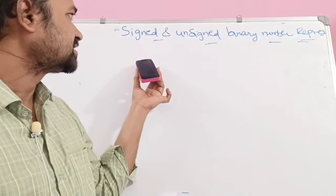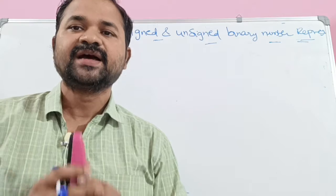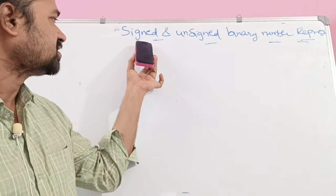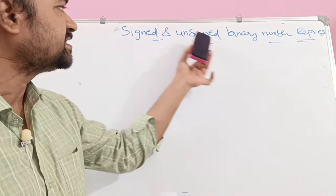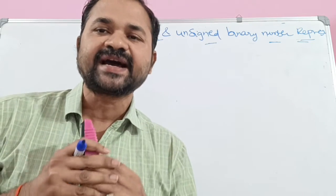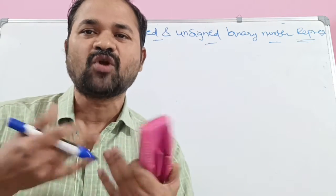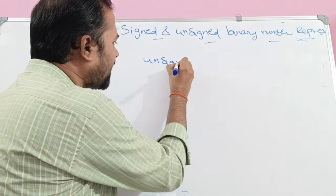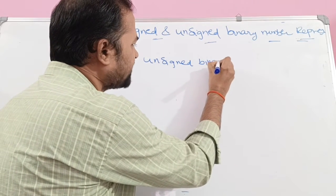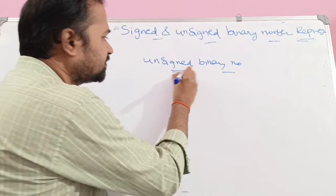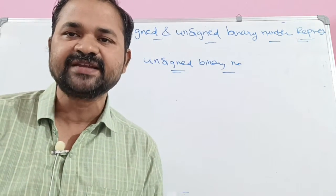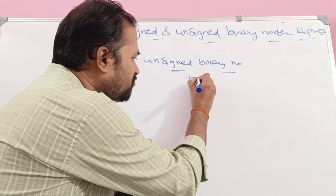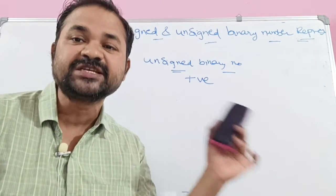Let us discuss signed and unsigned binary number representation. We can represent a binary number in two ways: the first way is using signed representation, and the second way is using unsigned representation. First, let us see what an unsigned binary number is. Unsigned binary number means the name itself specifies the meaning — unsigned means there is no sign. If there is no sign, the default sign is positive. So unsigned binary numbers are always used for representing positive numbers.